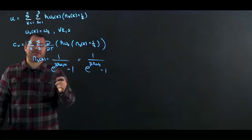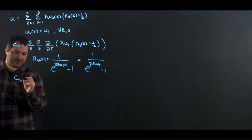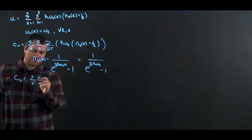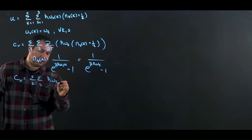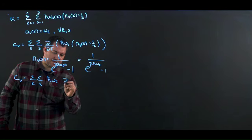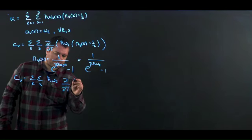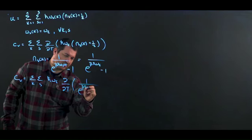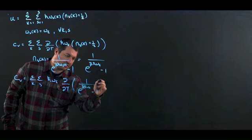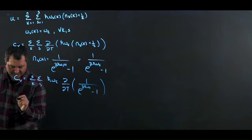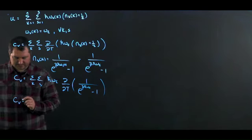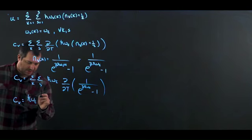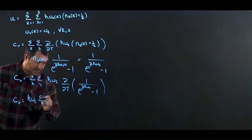The derivative of the constant term won't do anything. So, C_V is going to be equal to the sum over k, sum over s, of ℏ omega_E — and I'm just taking the derivative with respect to T — times 1 over (e^(β ℏ omega_E) minus 1).